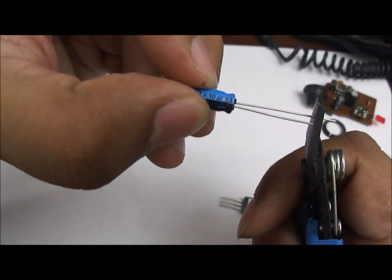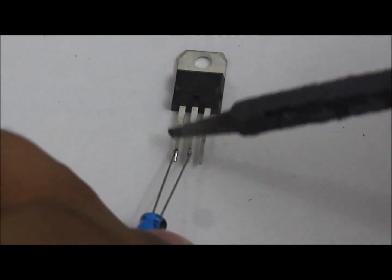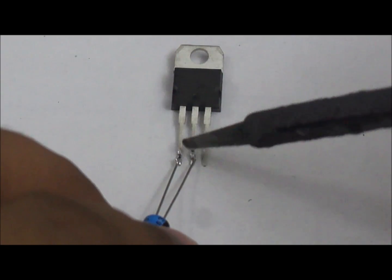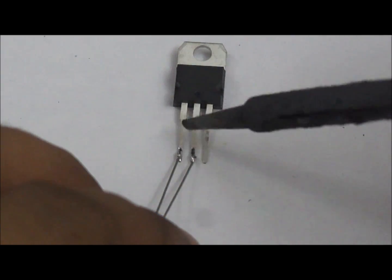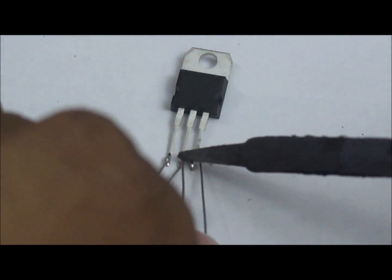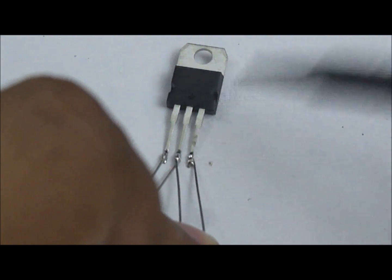First we equalize the lengths of the capacitor leads. We connect the positive terminal of the 10uF capacitor to the first pin and the negative terminal to the second pin of the 7805. Next we connect the 0.1uF ceramic capacitor across the second and third pins of the IC.